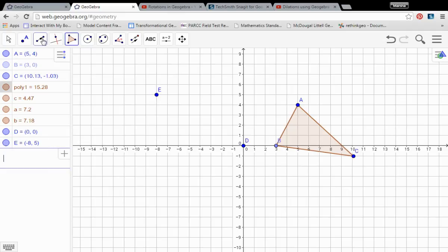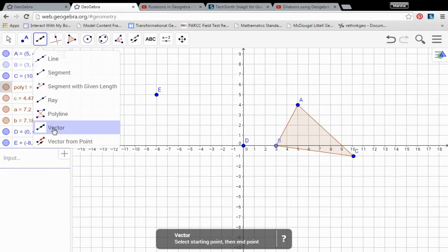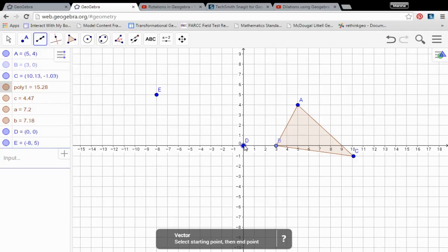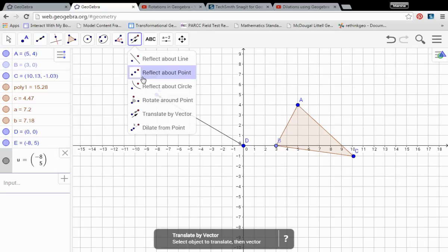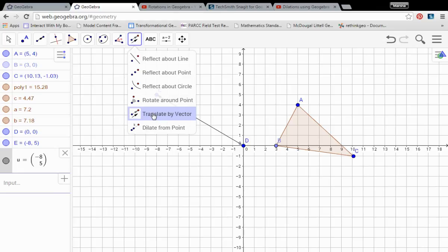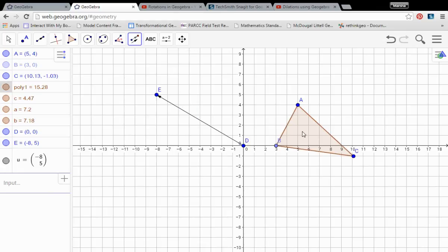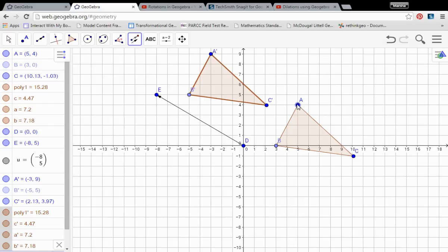And then I want to draw my vector. So the vector should go from the origin to that point E. And there again, I can see in my vector, eight units. Since it's a negative eight, it tells me it's going to go left eight. And the positive five vertically tells me it's going to go up five. So I choose translate by vector in the transformations menu. Click on the polygon. Click on the vector.